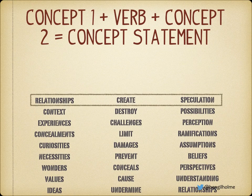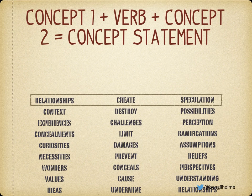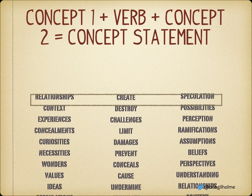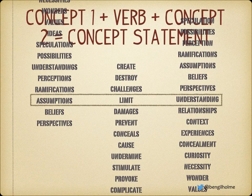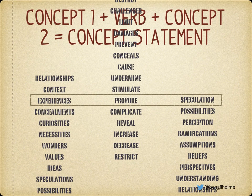You can see on the left and also on the right I've got all the concepts from the unit, and in the middle I've got the verbs — it's just a matter of mixing and matching those. So the first one we come up with is: concealments stimulate curiosity. Makes perfect sense — if you hide something, people generally try and find it. The second one: assumptions limit understanding. If you make assumptions, they tend to prevent you from finding the truth, which limits your understanding. Finally: experiences provoke speculation — when something happens to you, it makes you wonder about why it happened and what might be the consequences of that experience.